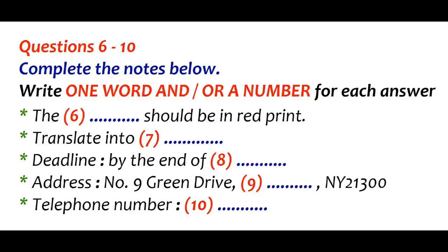Just keep me updated. So roughly, when can we get the revised print? We need it before the end of July. It's late June now. Roughly it'll take three weeks to re-edit, so we'll definitely be ready before the deadline. Great. To where shall we send the samples? The address is number 9, Green Drive, Clifton, NY21300. How do you spell Clifton? C-L-I-F-F-T-O-N, Clifton. And the telephone number? It's 903036602. Also, if you have any further questions, you can reach me through this number.